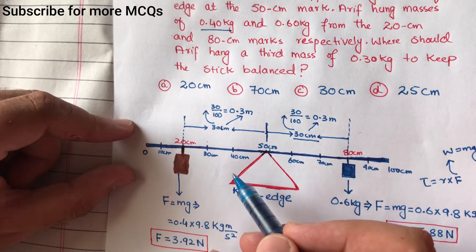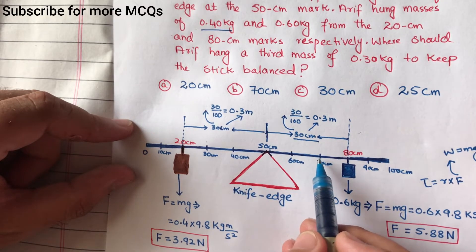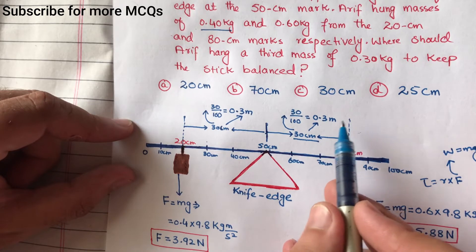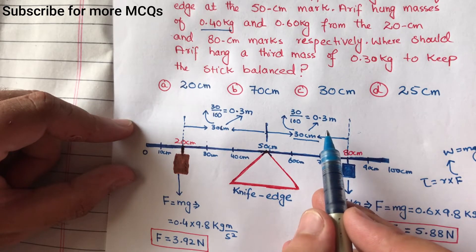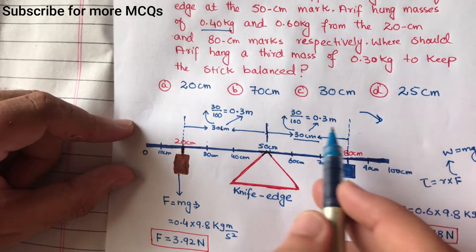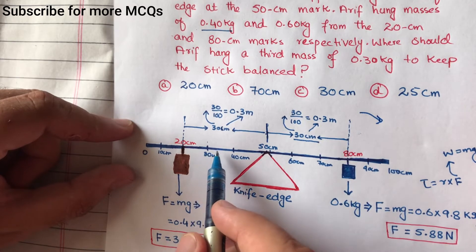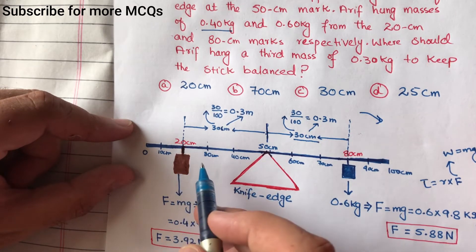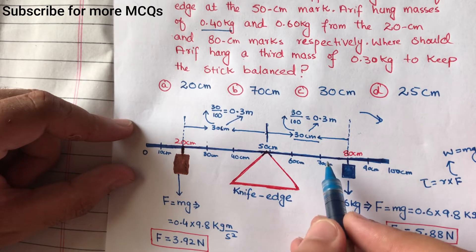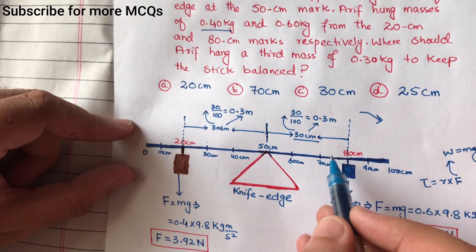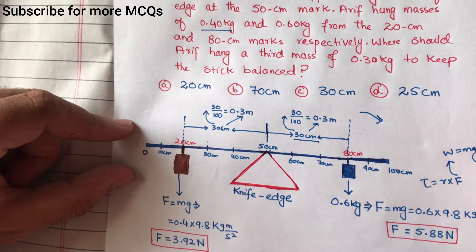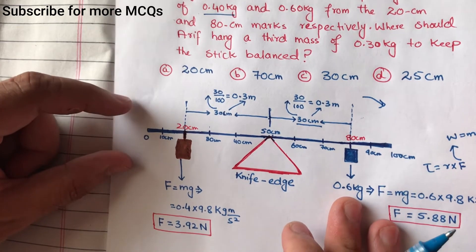Anti-clockwise torque معلوم کریں گے اور پھر دیکھیں گے کہ net torque کس direction میں ہے — clockwise یا anti-clockwise۔ اگر net torque clockwise ہوا تو mass کو right side پر attach کریں گے۔ اگر net torque anti-clockwise ہوا تو mass کو left side پر attach کریں گے۔ پھر distance بھی معلوم کریں گے۔ چلو solution کی طرف جاتے ہیں۔